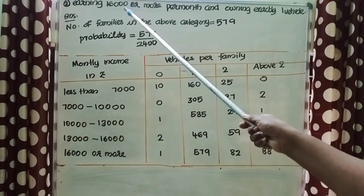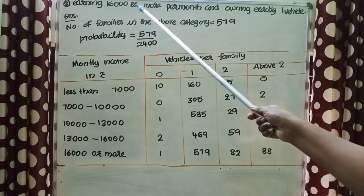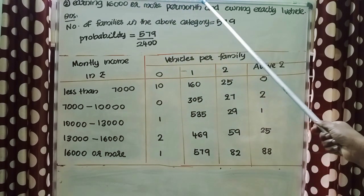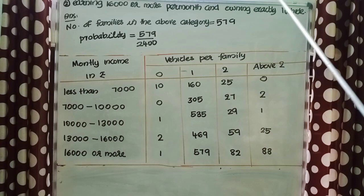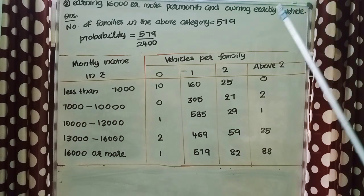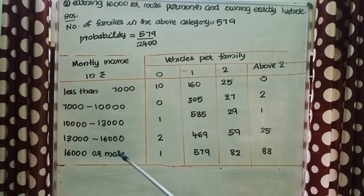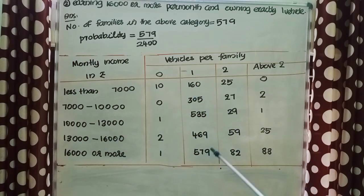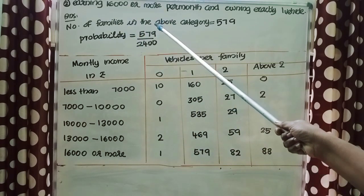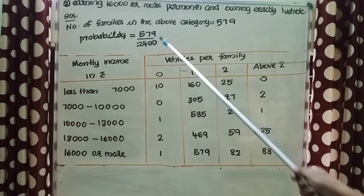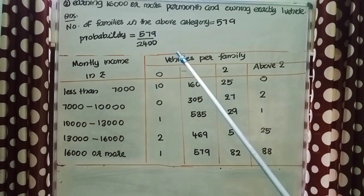Second question: probability of a family earning 16,000 or more per month and owning exactly 1 vehicle. From the table, number of families in this category = 579. So probability = 579/2,400.